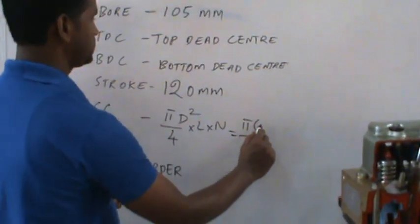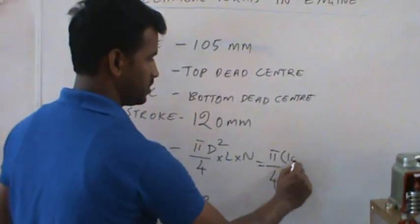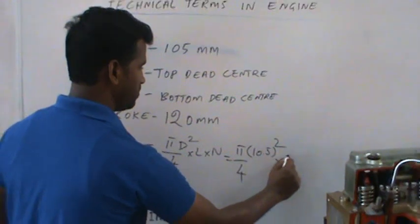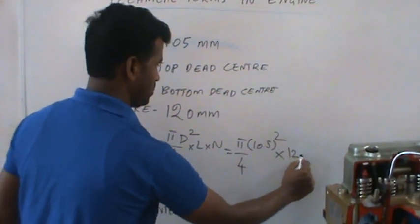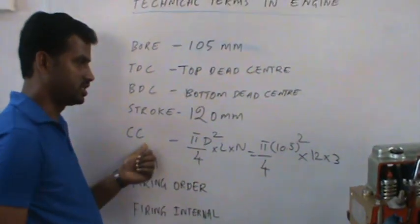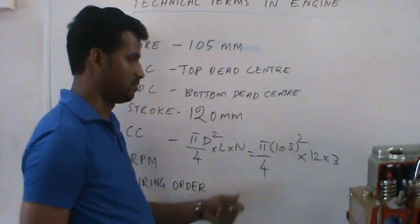D is 10.5 centimeters squared, multiplied by 12, multiplied by number of cylinders which is 3. If you are applying these figures in this formula,